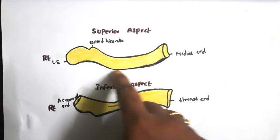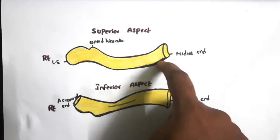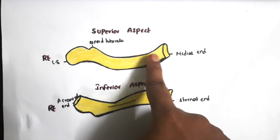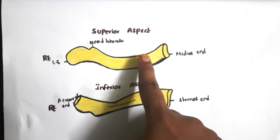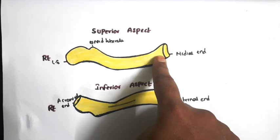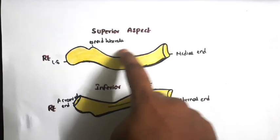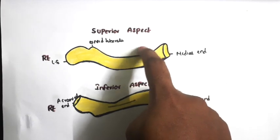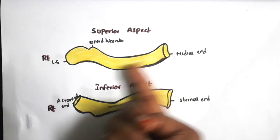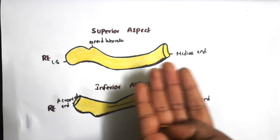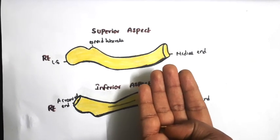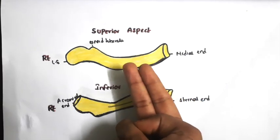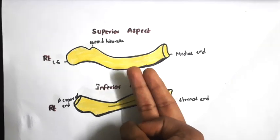Now we will see the surfaces in detail. The anterior surface is convex forwards and smooth. The superior surface on its medial area is rough. The posterior surface is concave backwards and smooth. The inferior surface on its medial area consists of a rough oval impression. Laterally, the lateral half of the inferior surface consists of one groove known as the subclavian groove.